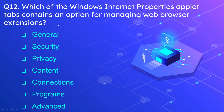Question number 12: Which of the Windows Internet Properties applet tabs contains an option for managing web browser extensions? The options are General, Security, Privacy, Content, Connections, Programs, and Advanced. The correct answer is the Programs tab.